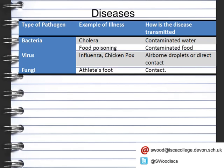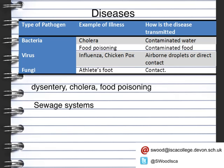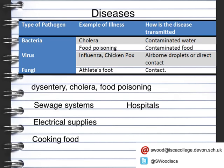One of the big ways in which diseases can be spread is during natural disasters such as earthquakes, hurricanes, or erupting volcanoes. These can kill thousands of people, but what can also happen is a rapid spread of diseases such as dysentery, cholera, and food poisoning. This can occur because damage to sewage systems means drinking water can become contaminated, electrical supplies fail so refrigeration and freezers stop working, energy supplies affect the ability to cook food properly, and hospitals, medical supplies, and road systems can be damaged or destroyed.